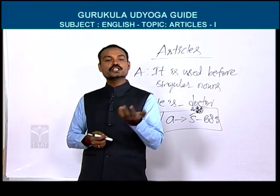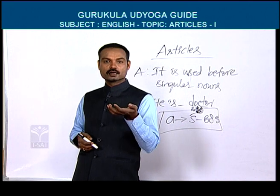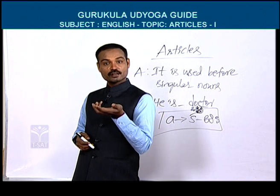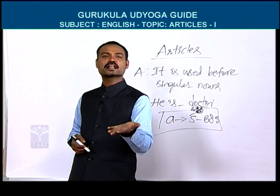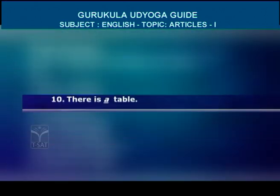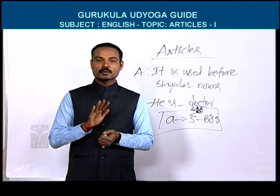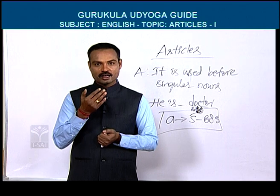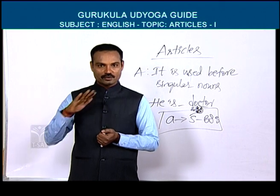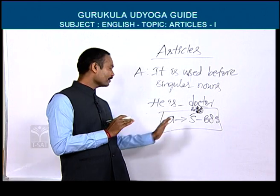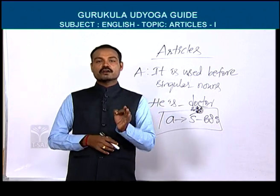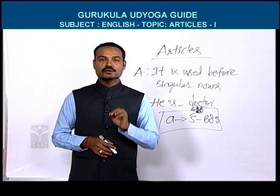More examples: 'She brought ___ bag' — bag gives consonant sound BA, answer is A. 'There is ___ table' — table gives consonant sound TA, answer is A. I have clearly explained when to use A. Now let us learn when to use AN.